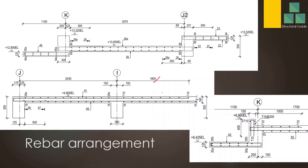Depending on the span, the whole span may be in hogging — there may not be a sagging moment at all. For example, if you draw the bending moment diagram, the bending moment may show only hogging with no sagging moment. This can happen when the adjacent span is very large. In such cases, you have to provide continuous hogging reinforcement and you cannot discontinue the reinforcement in that span. Those things you have to consider during the design.